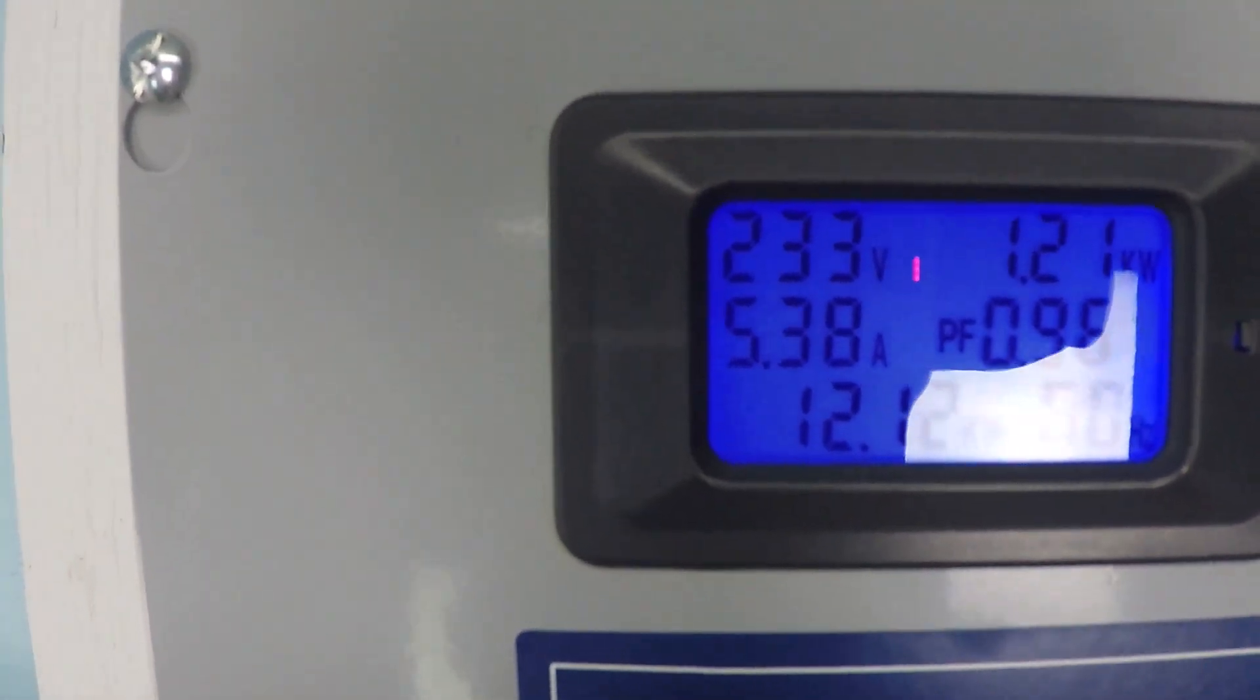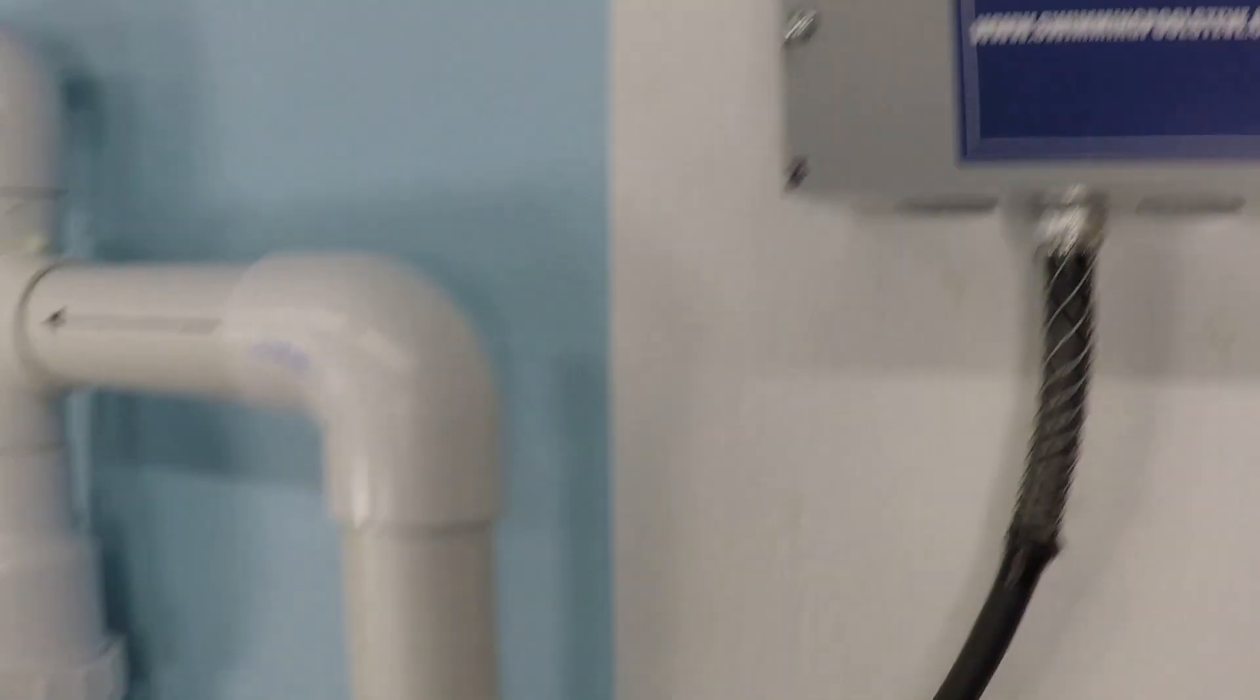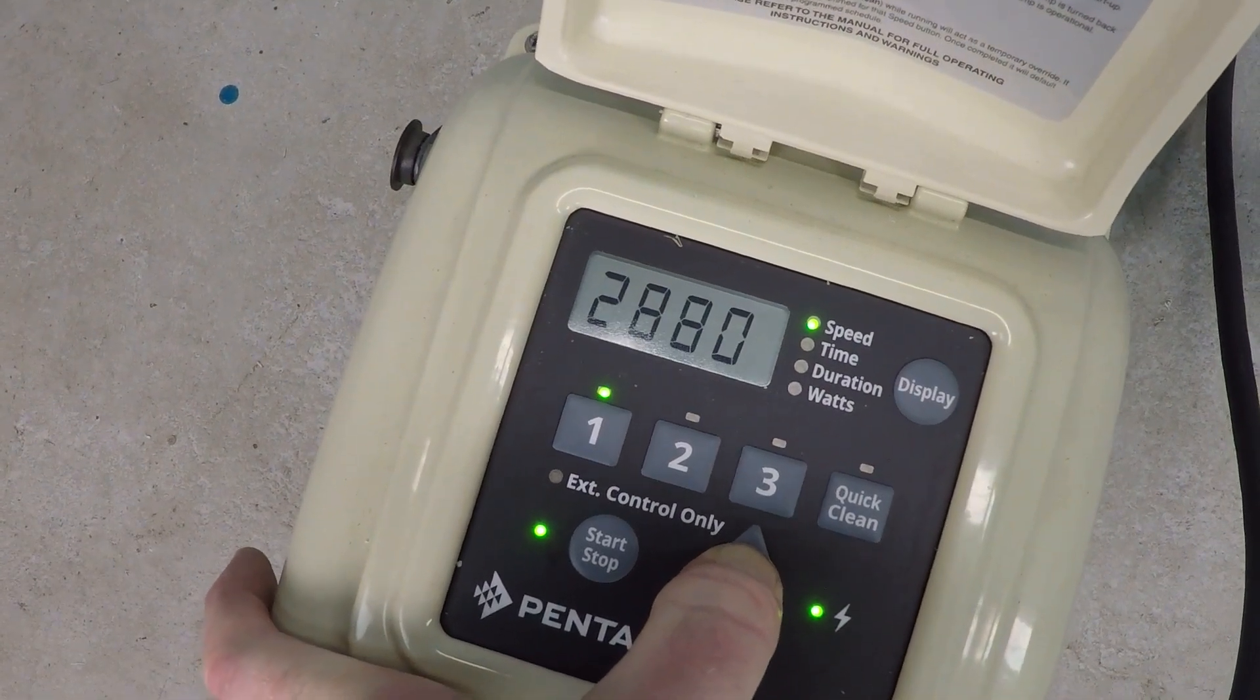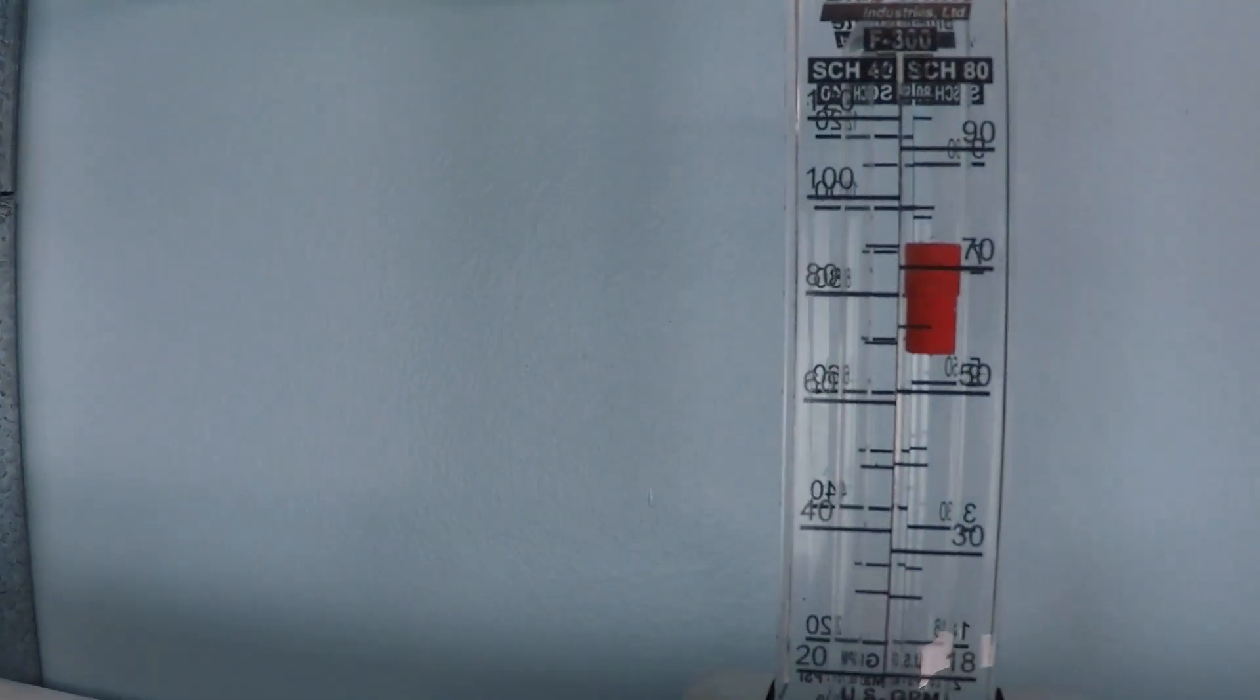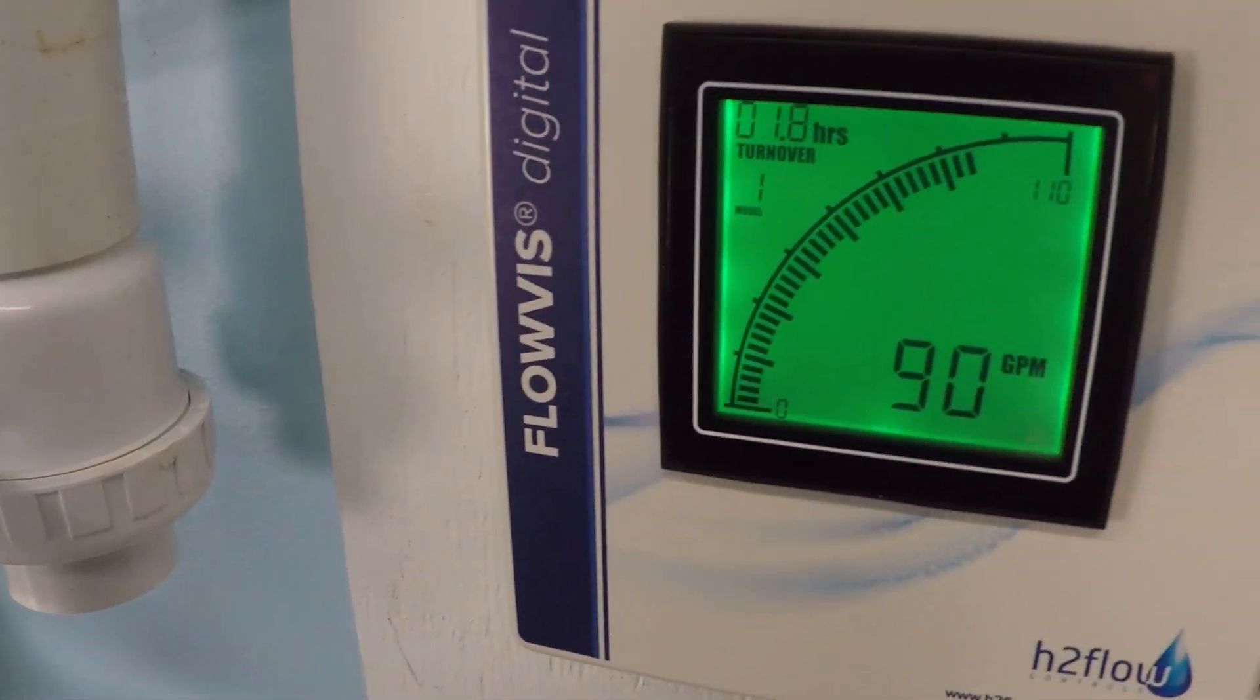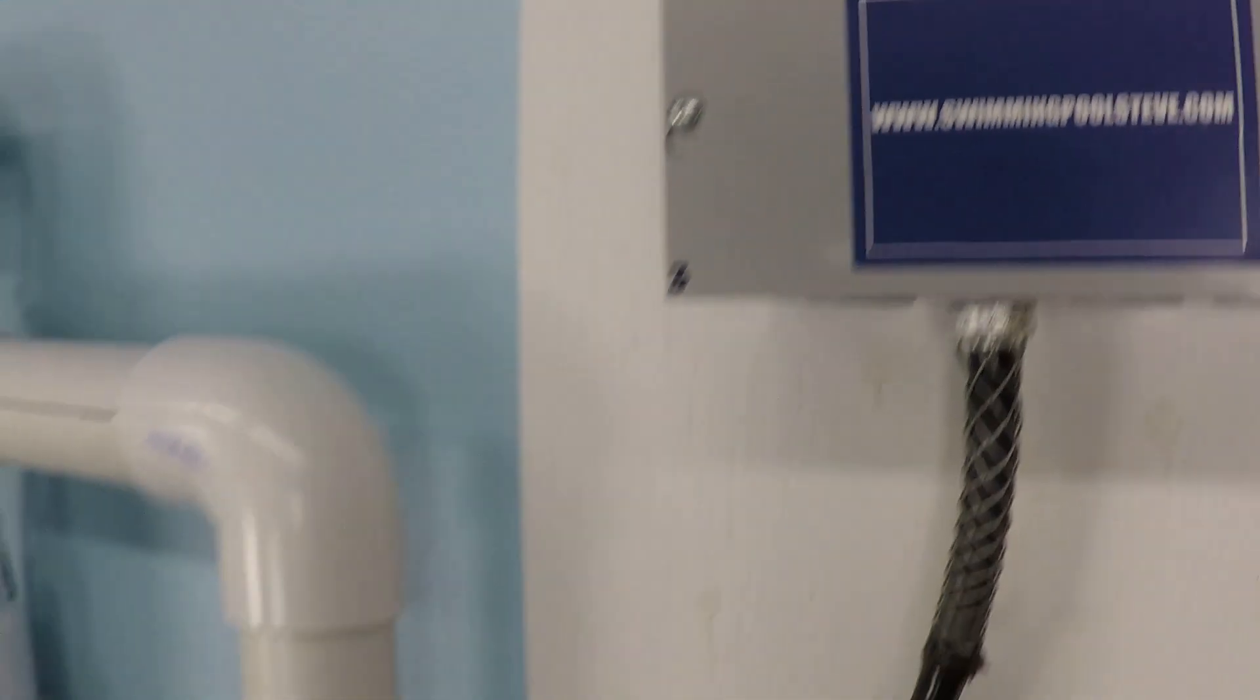80 gallons per minute now, 1.21 kilowatts - that's 1,200 watts essentially. 90 gallons per minute. Again, huge jump in power - 1.54 kilowatts, 1,500 watts.